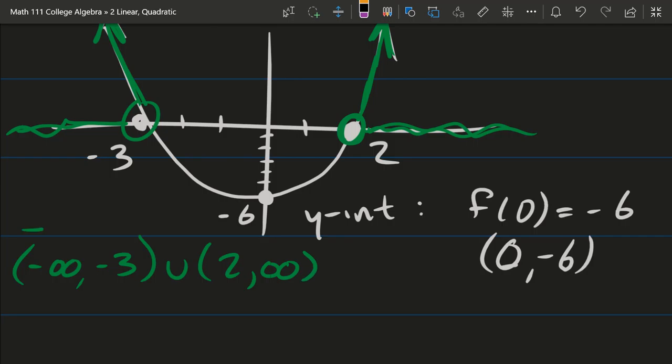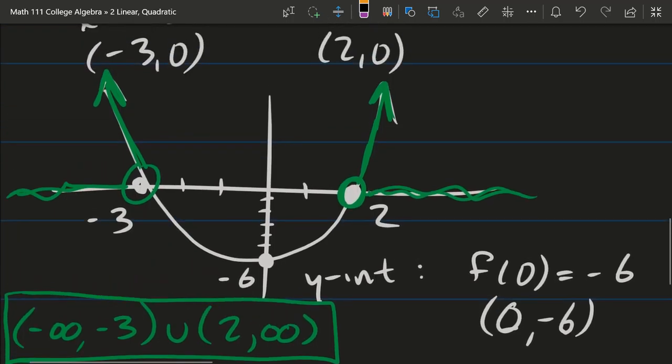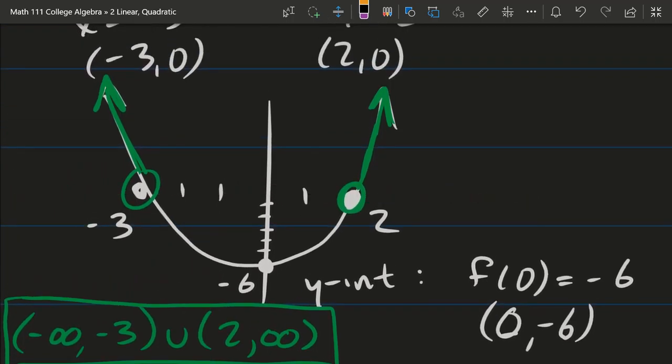The left interval goes all the way to negative infinity and up to negative 3. We do not equal negative 3, so it's open there. And we're going to start back from 2, so I'm describing the right interval now: 2 to positive infinity. And this right here will be the answer to our question.